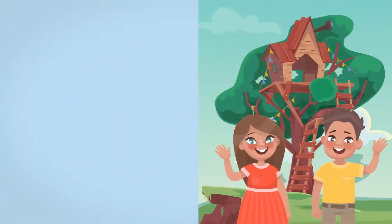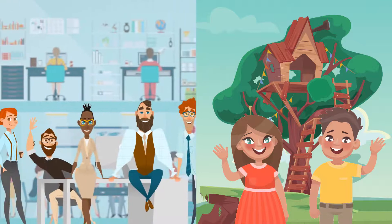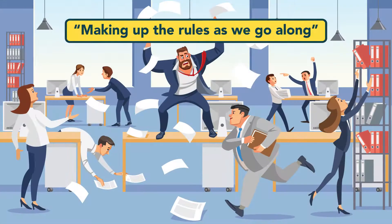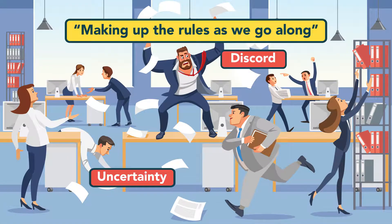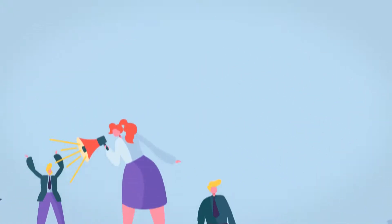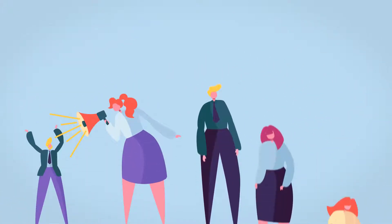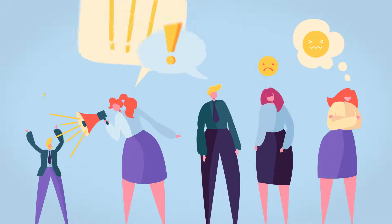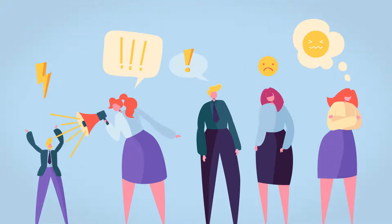In any joint endeavor, whether it's children getting together to build a treehouse or entrepreneurs and investors establishing a multi-million dollar business, human experience teaches us that making the rules up as we go along invites uncertainty, discord, power struggles, mission failure, and the eventual dissolution of the group. The more people involved in such an informal effort, the more likely these undesirable consequences become.